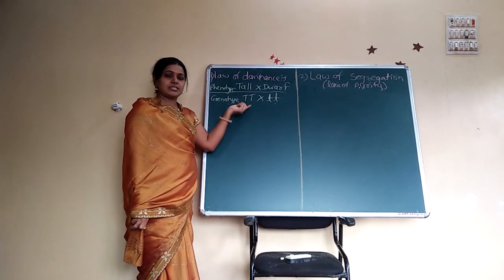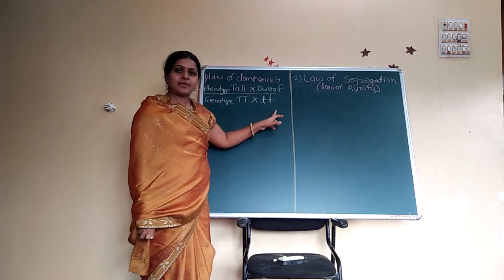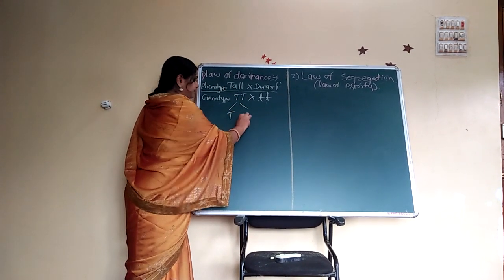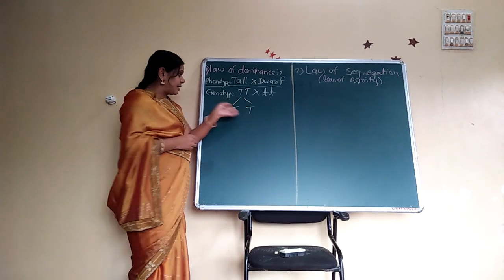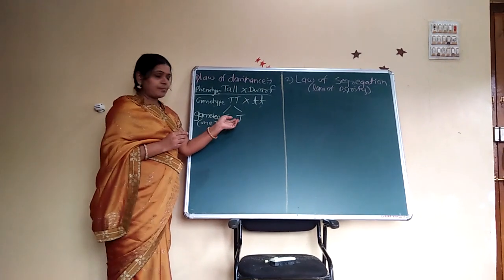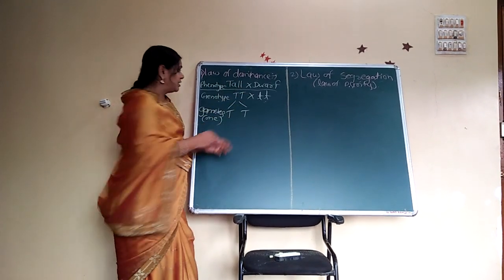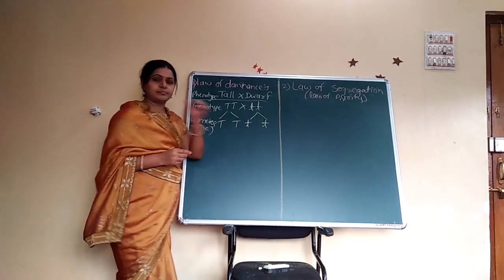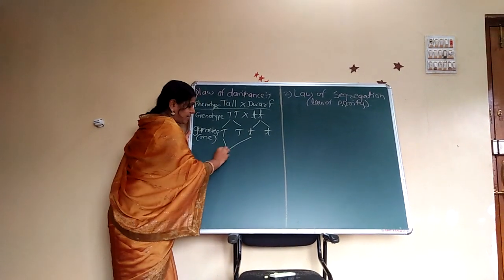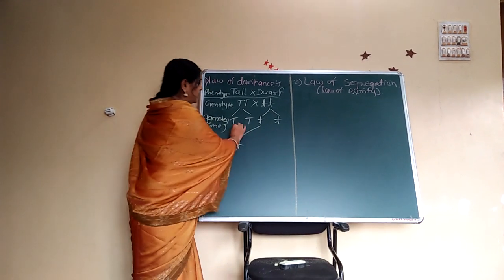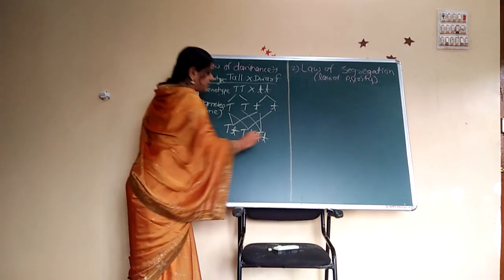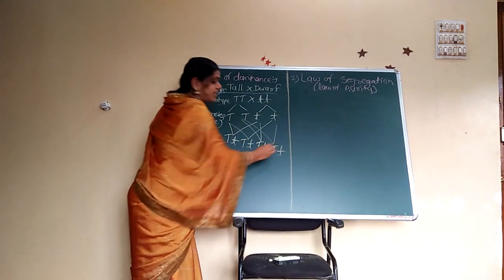The genotype of pure tall is capital D capital D, and the genotype of pure dwarf is small d small d. When these are crossed with each other, gametes are formed. One type of gamete is formed from each parent. When these gametes are fused with each other, capital D fuses with small d, giving capital D small d in each combination.